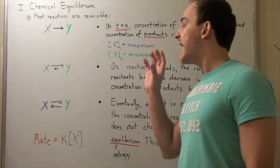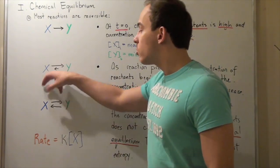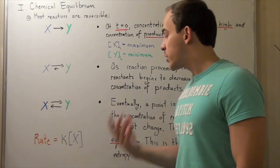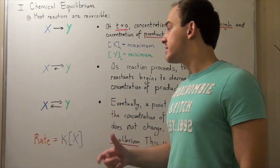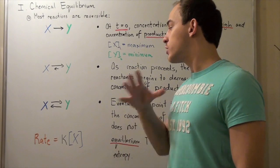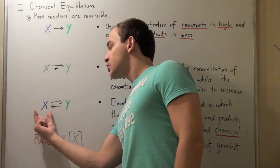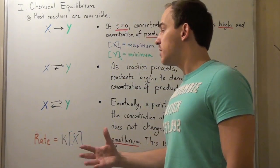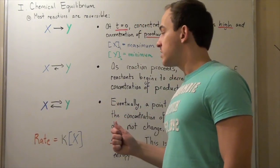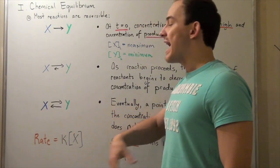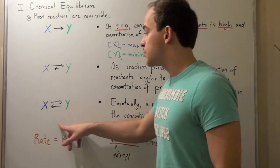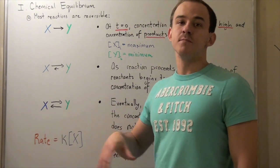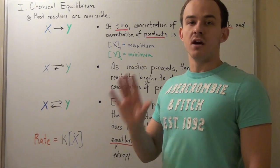Suppose, for example, I added more X. If I added more X, I would change my concentration of X, and for some time my concentration of X would change, shifting equilibrium to the right — causing X to be converted to Y at a faster rate than Y converts to X. That's called Le Chatelier's Principle, and we'll talk about that in another lecture.